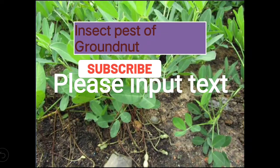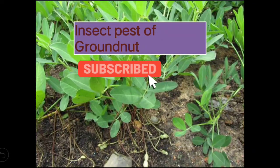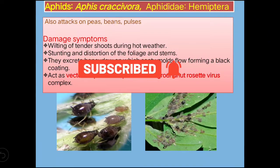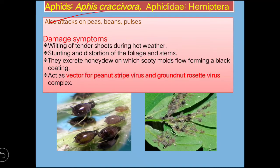Hello everyone, welcome to Insecta channel. Today we'll discuss the insect pest of groundnut. First, we'll discuss the aphid, which is the sucking pest of groundnut. The scientific name is Aphis craccivora, family Aphididae, order Hemiptera.